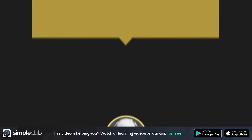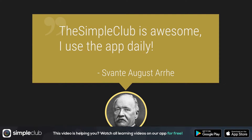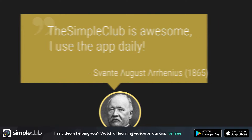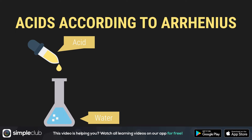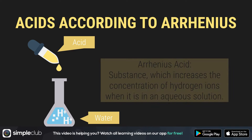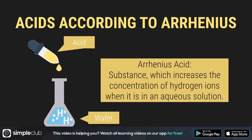Now we're going to look back at what Arrhenius, the old acid-base guy, came up with. According to Arrhenius, an acid is a substance which increases the concentration of H-plus ions when it's dissolved in water. So an Arrhenius acid is a substance which increases the concentration of hydrogen ions when it is in an aqueous solution.